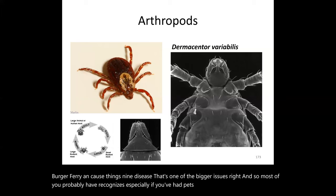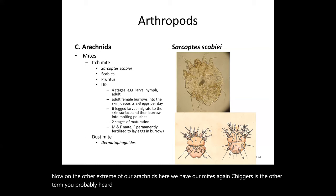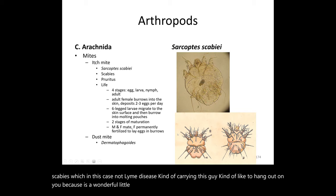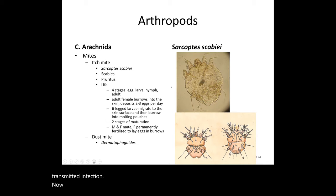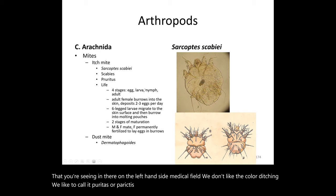On the other end of our arachnids are mites — also called chiggers. The infamous Sarcoptes scabiei, unlike a tick, doesn't transmit Lyme disease; instead, it causes the disease scabies, which is also a sexually transmitted infection. It causes an intense itching — medically termed pruritus — as the parasite burrows into the host.